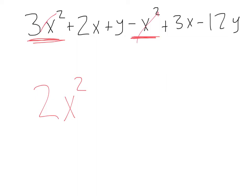Now that those are taken care of, let's move on to our x term. Here I have a 2x, here I have a 3x. I can combine those. That's going to give me plus 5x.